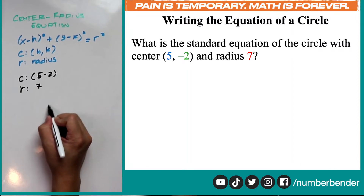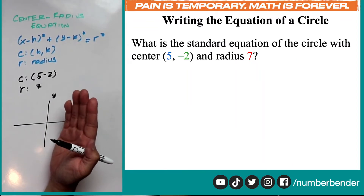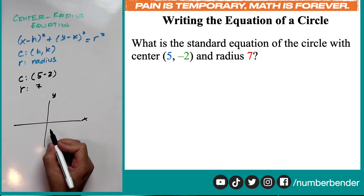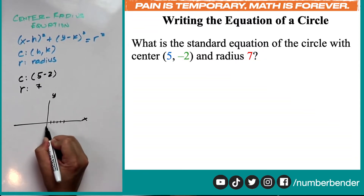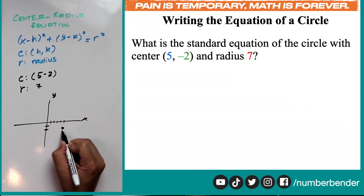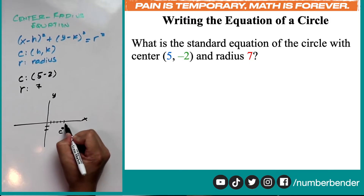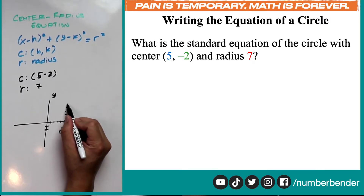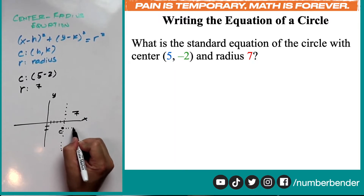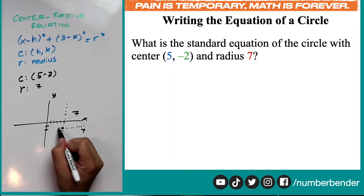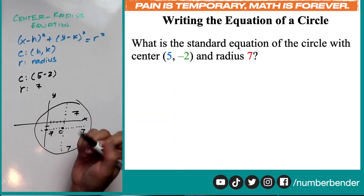If we visualize this in our xy plane, the center at 5, negative 2 is 5 units right and 2 units down. So the center is right here. To find the graph of the circle with radius 7, from the center you count 7 units up, 7 units down, 7 units to the right, and 7 units to the other direction. And now we are forming the rough sketch of our circle.